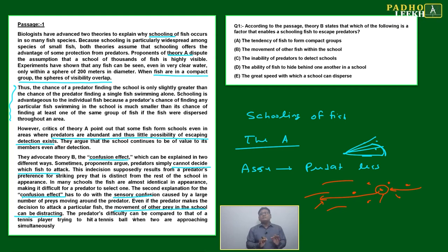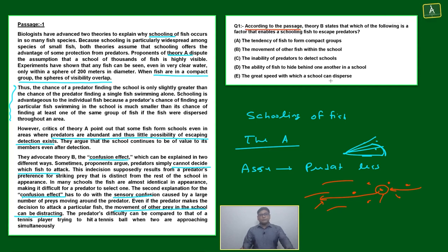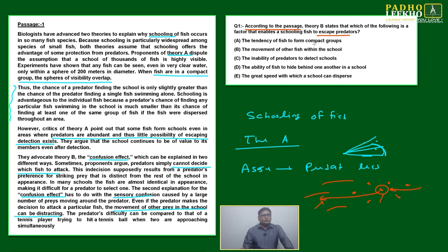The passage is trying to say fish are following schooling, and the overall purpose is to take some safeguard against predators — that is the only fact. Now Question 1: Theory B states that which of the following is a factor that enables a schooling fish to escape predators? The main reason is movement of fish — due to that, the predator will be distracted and get confused. Option: the tendency of fish to form compact groups — no, Theory B is not about groupism.